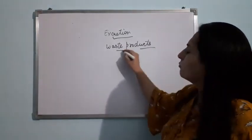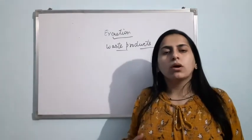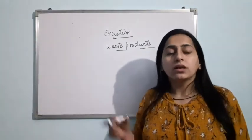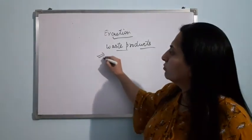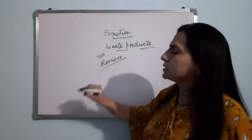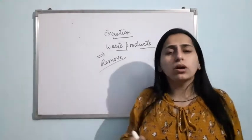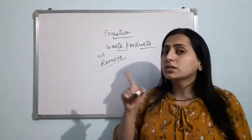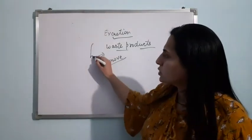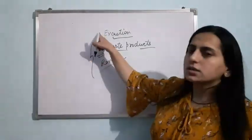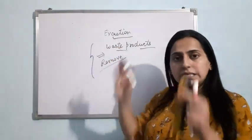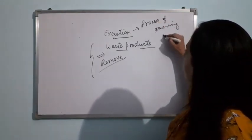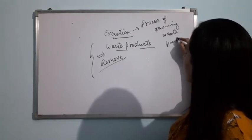While functioning, the cells of our body produce some kind of waste products — products that are useless for the body. So there is a need to remove these waste materials. If these waste materials are not removed from the body, they will be toxic and will harm the body. Therefore there is a need to remove these substances, and the process of removing waste products from the body is known as excretion.